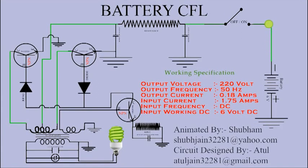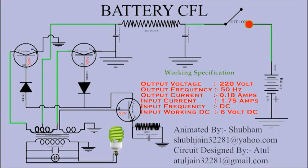Now you can see that a neon bulb has been connected on the secondary winding; other than this, a condenser and a CFL have also been connected. As oscillation takes place, 220V is generated as output, and the condenser stores that charge and gives it to the CFL time to time so that the CFL receives regular voltage.